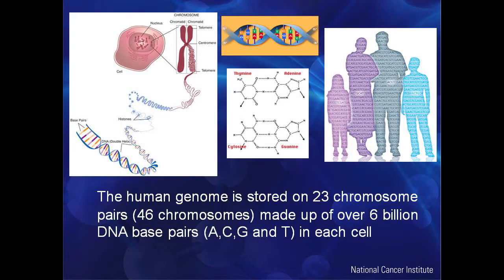The human genome is stored in 23 pairs of chromosomes in the nucleus of your cell, and the chromosomes are made up of coiled DNA. DNA is made up of base pairs — four base pairs to be precise — and in one cell we have over 6 billion DNA base pairs. Basically, we're just genetic codes that are walking around.